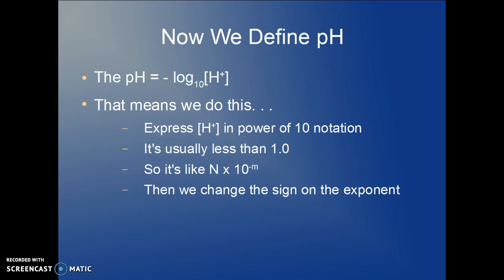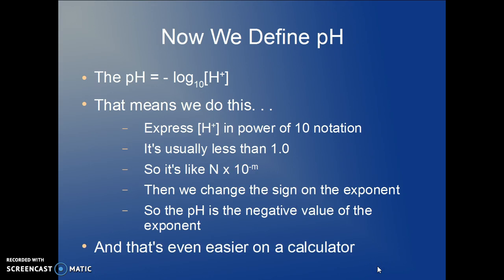So we change the sign on the exponent so the pH is almost always positive. And the pH then is the negative value of the exponent on 10. And of course, with a calculator, that's extremely easy.